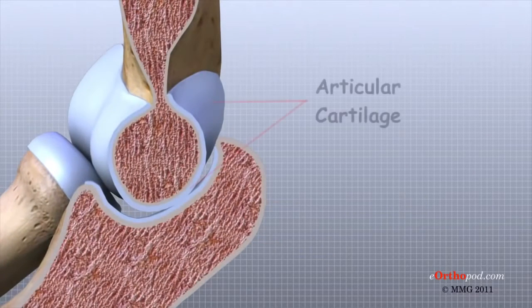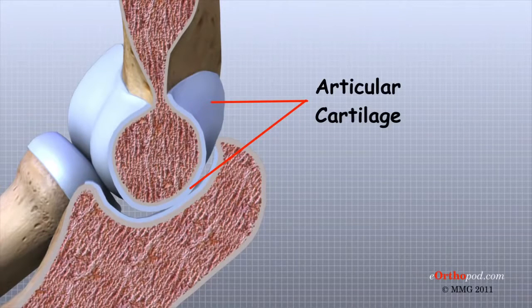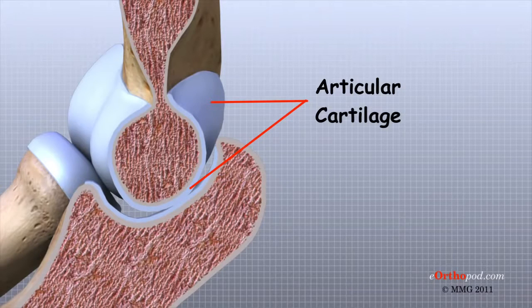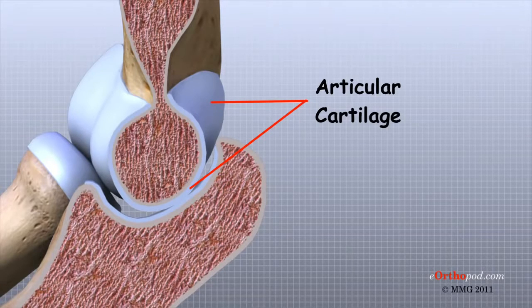Articular cartilage is the material that covers the ends of the bones of any joint. Articular cartilage can be up to one quarter of an inch thick in the large weight-bearing joints. It is a bit thinner in joints such as the elbow, which don't support weight. Articular cartilage is white, shiny, and has a rubbery consistency.